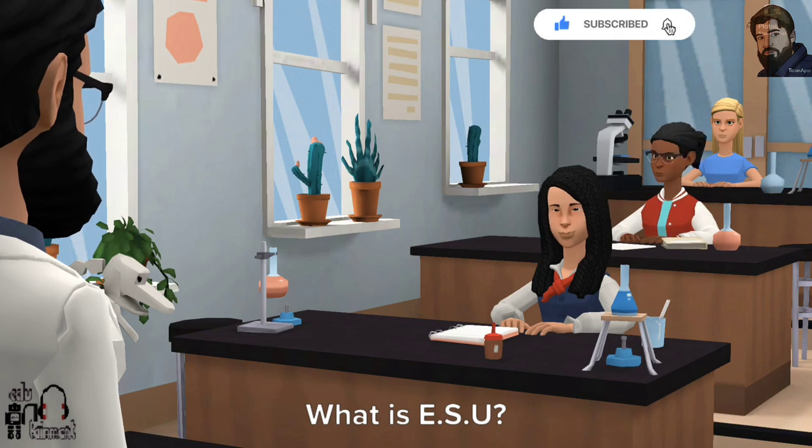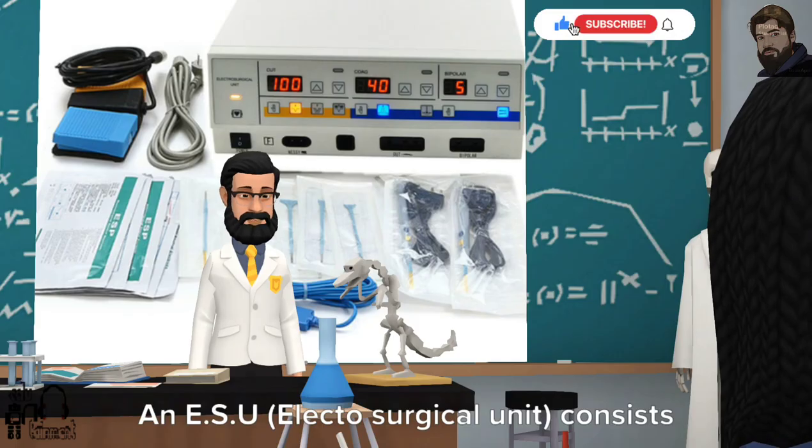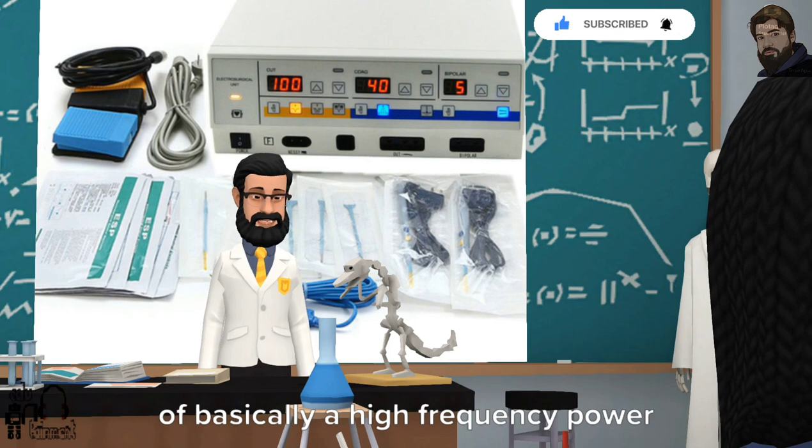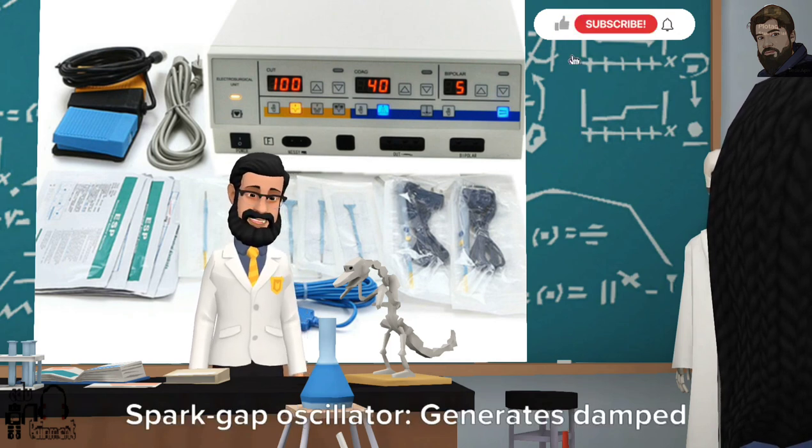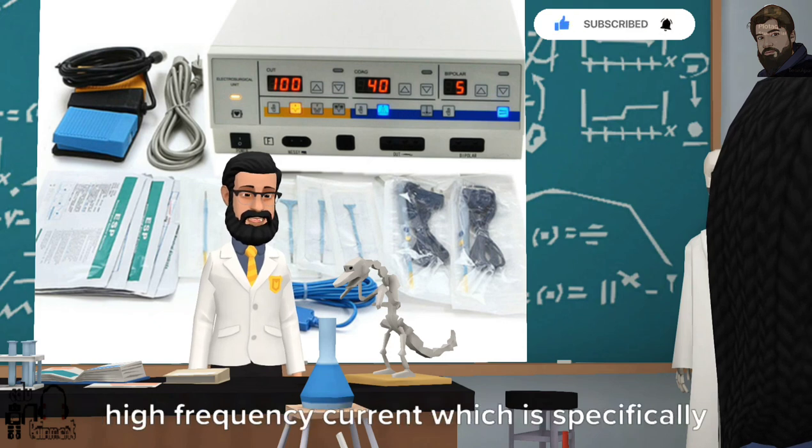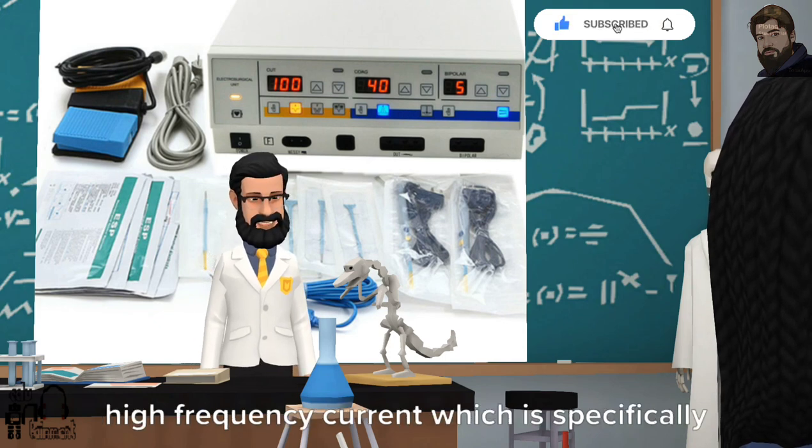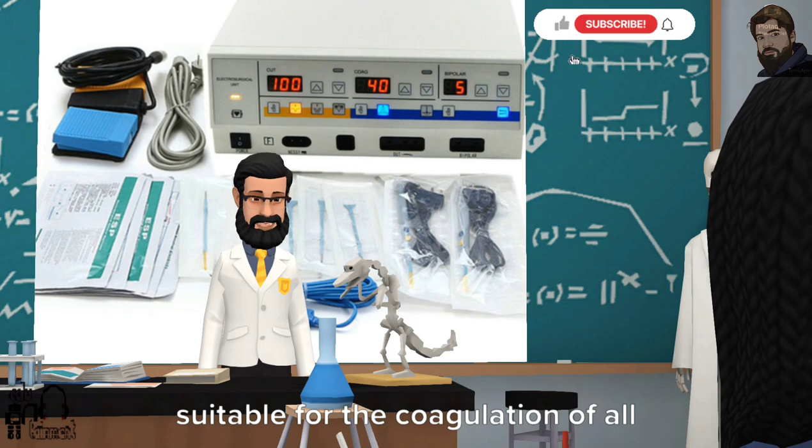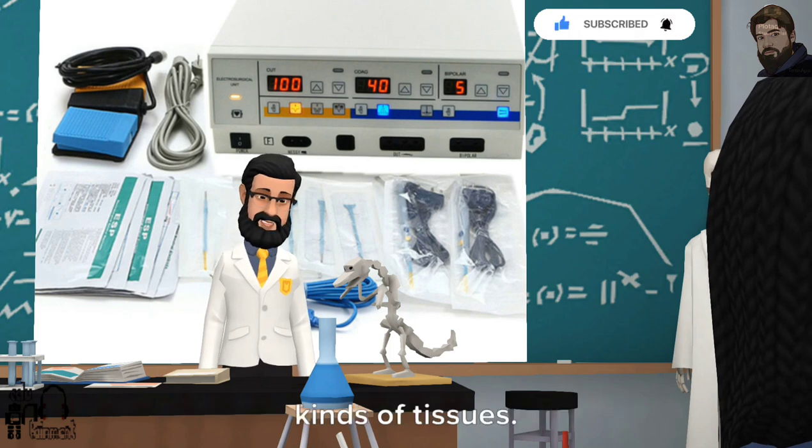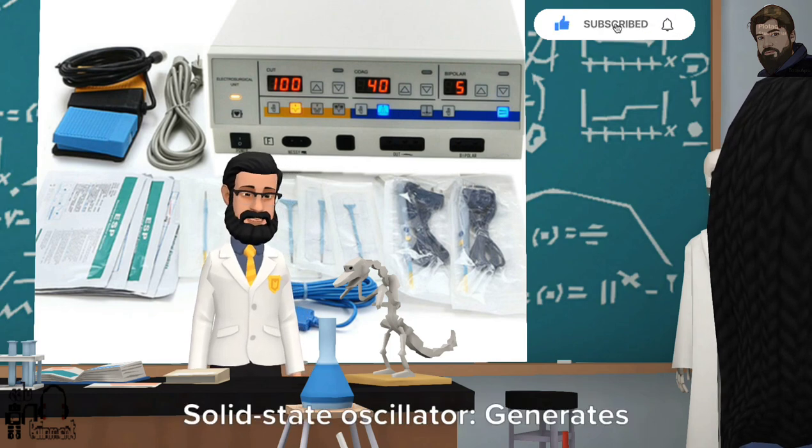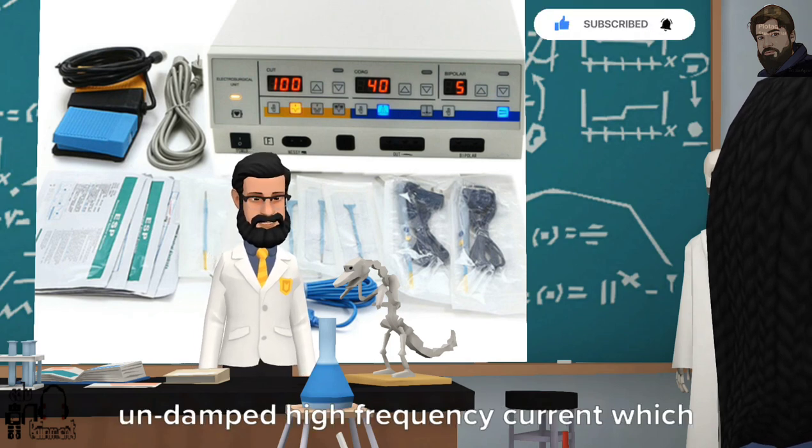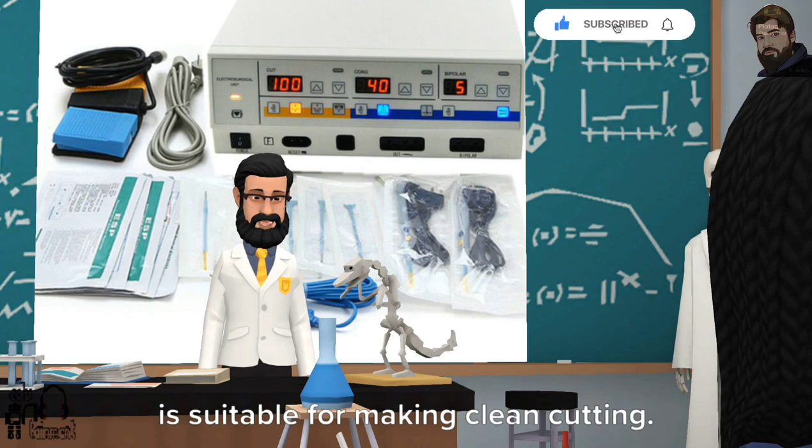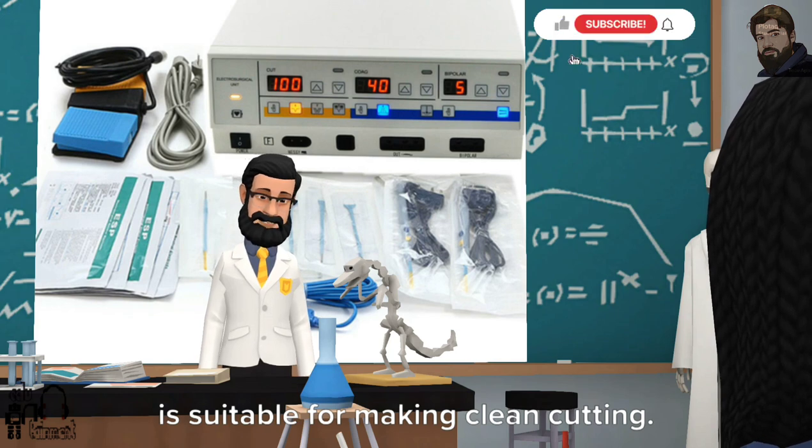What is ESU? An ESU, electrosurgical unit, consists of basically a high-frequency power oscillator. Spark gap oscillator generates damped high-frequency current which is specifically suitable for the coagulation of all kinds of tissues. Solid state oscillator generates undamped high-frequency current which is suitable for making clean cutting.